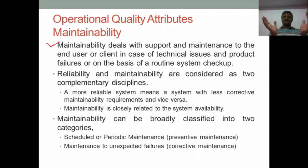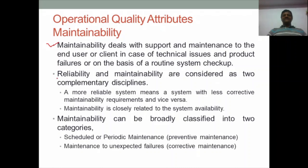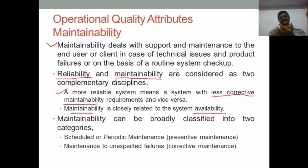Maintainability is also required for all embedded devices. The system should be checked periodically or repaired within a stipulated time. Reliability and maintainability are complementary: if a system is more reliable, it requires less maintenance. Maintainability is linked to availability. Maintainability has two categories: scheduled or periodic maintenance, which is preventive maintenance, and maintenance for unexpected failures, which is corrective maintenance.